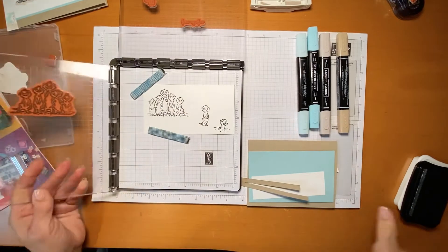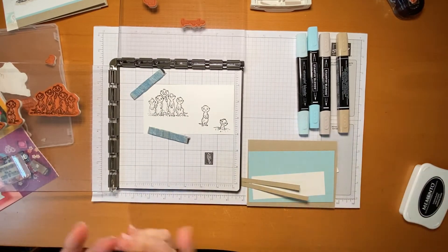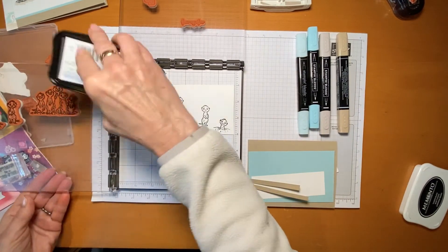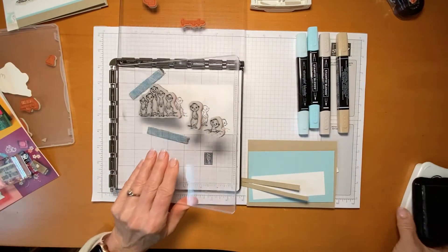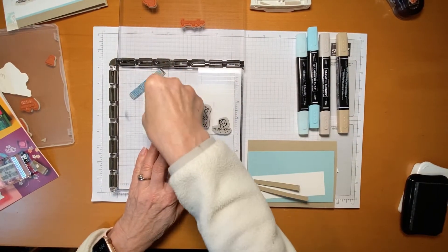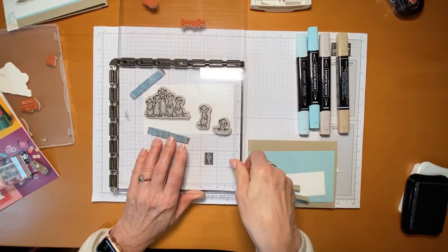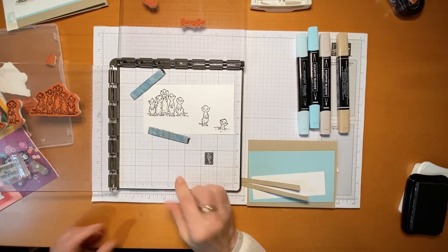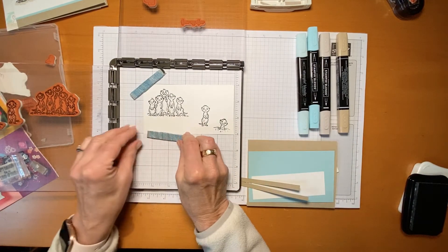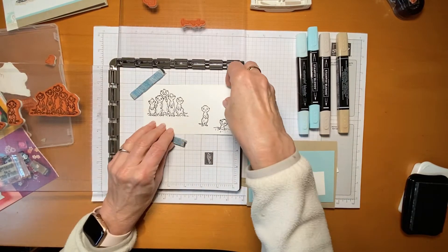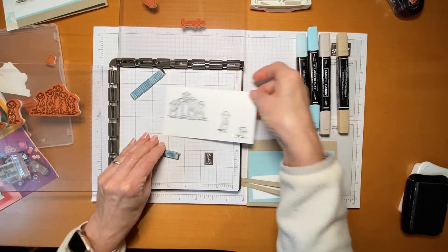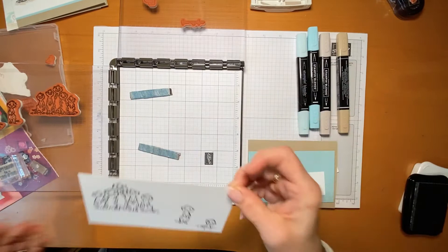I think I want to give this one a little bit more ink. That's the beauty of the Stamparatus. You can just re-stamp exactly where you did before and get a perfect result. So here is my little meerkat.